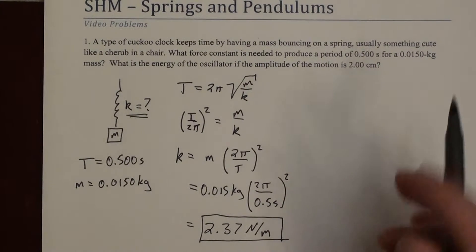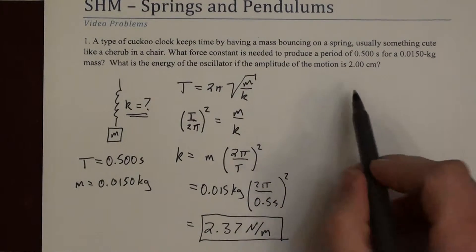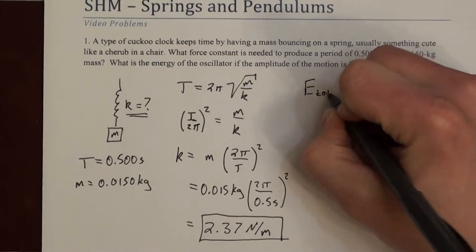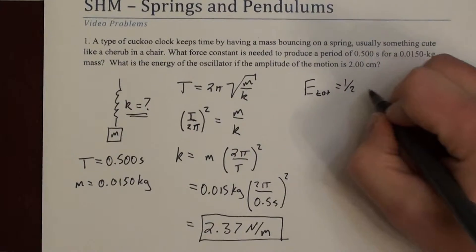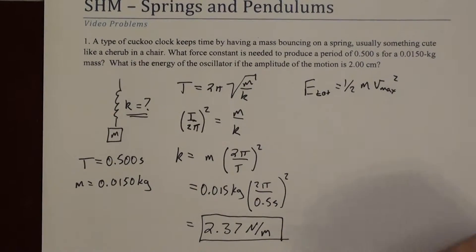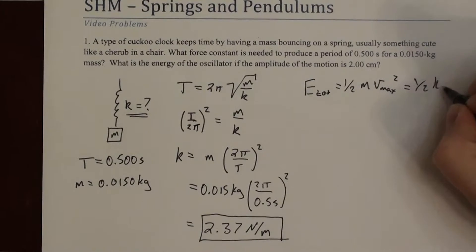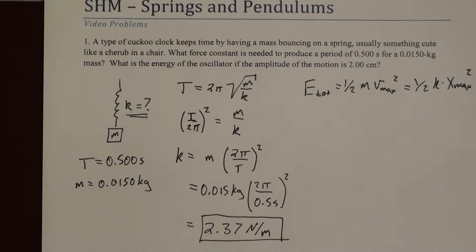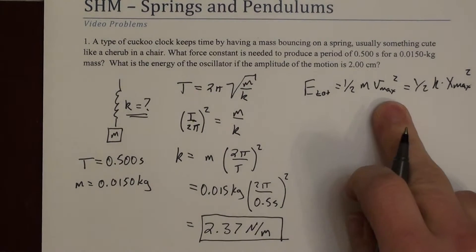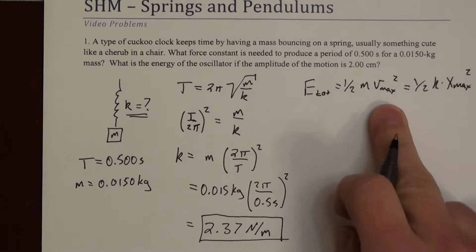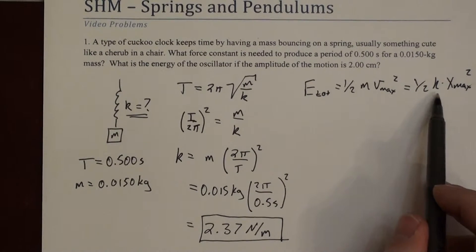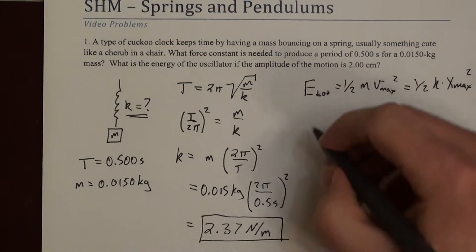The second part of the question asks for the energy of the oscillator if the amplitude is 2 centimeters. For a mass on a spring, total energy can be found as ½mv²_max (maximum kinetic energy) or ½kx²_max (maximum potential energy). Since we don't have v_max, it's more straightforward to use ½kx²_max, because k was just found and x_max is given as 2 centimeters.